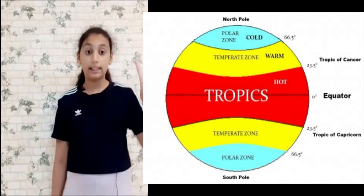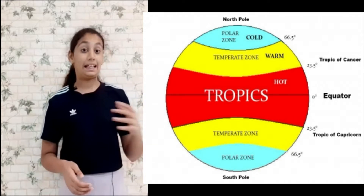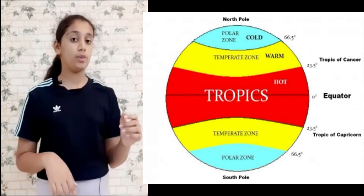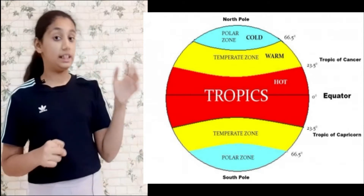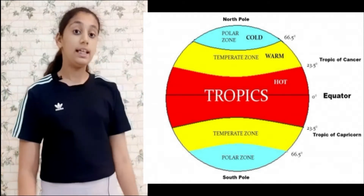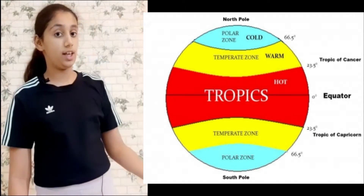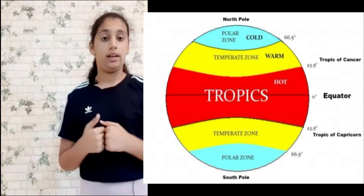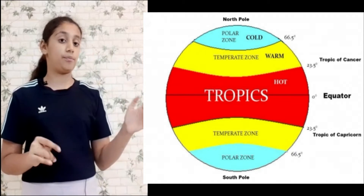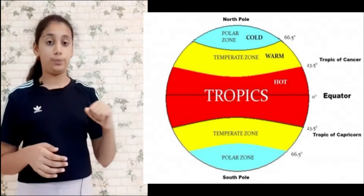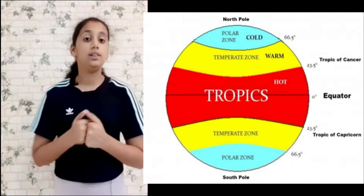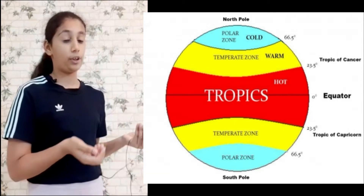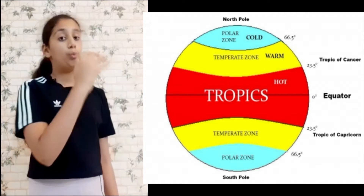The Earth can be divided into three parts based on their climate, known as the climate zones. The first are the polar regions, which, as the name suggests, lie near the poles — the North Pole and the South Pole — and have a cold climate. Next come the tropical rainforests, which lie near the equator. Then come the temperate zones, which lie between the tropical rainforests and the polar regions.